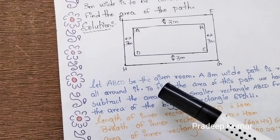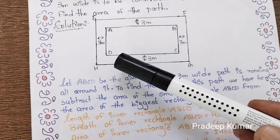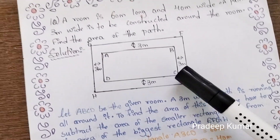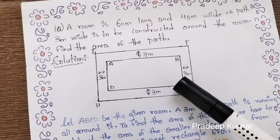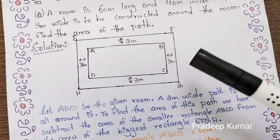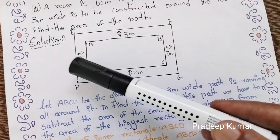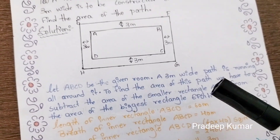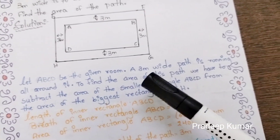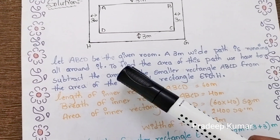Let ABCD be the given room. ABCD is the room. The length of the room is 60 meters and the width of the room is 40 meters. The path all around the room is 3 meters on each side. ABCD is the given room and a 3-meter wide path is running all around it.